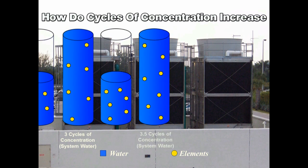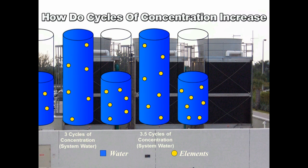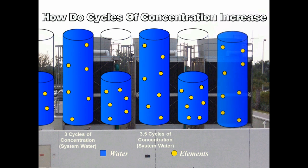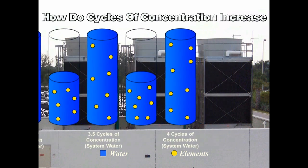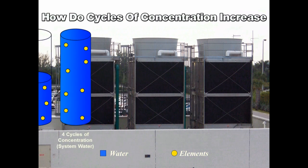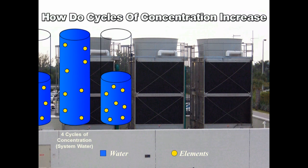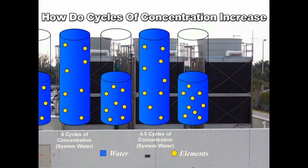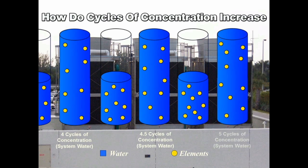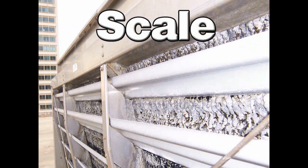Controlling cycles of concentration and the elements in water are extremely important to the operation of a cooling tower. When the elements in water concentrate to a level that exceeds the saturation point of the water, they fall out of the solution and form scale.